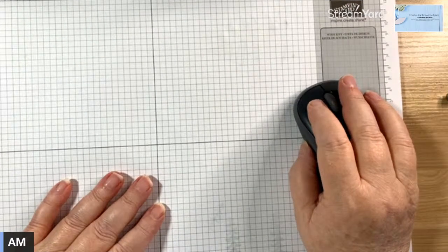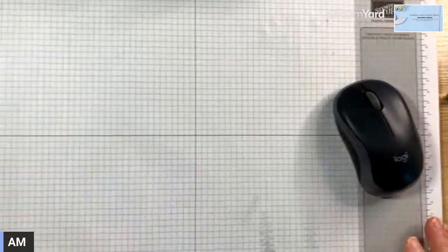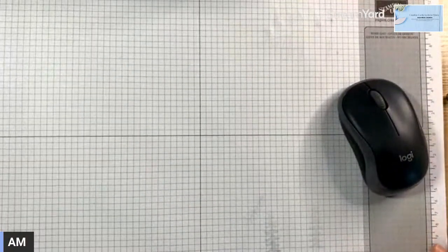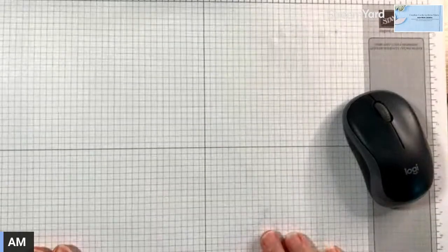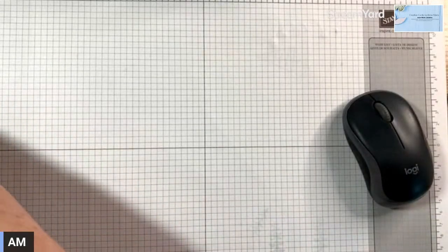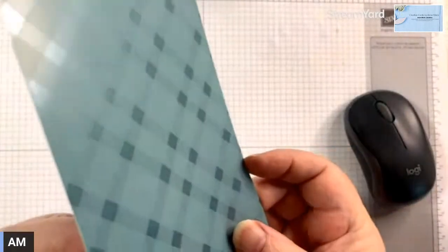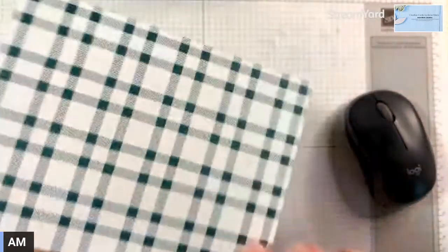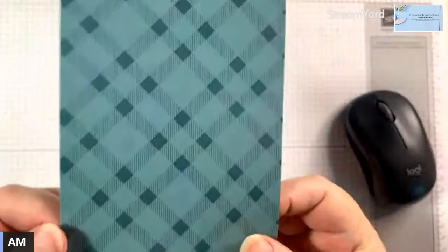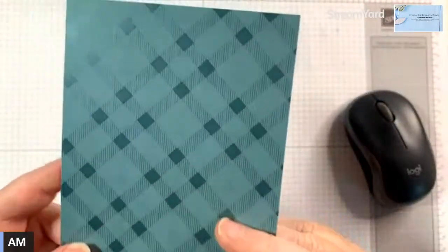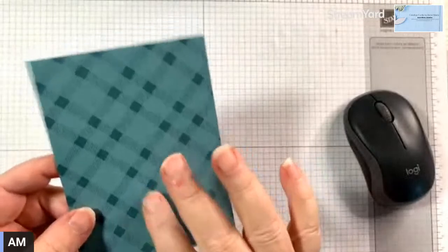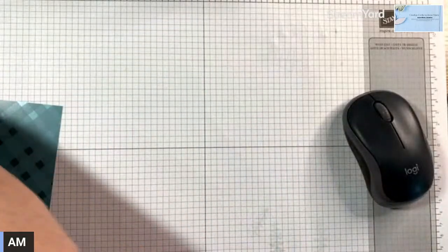Okay, there we go. So this is the paper we're using. It's just got like a shine to it. And on the other side, it's this. So this is a Lost Lagoon color. So we're going to make a card with this tonight.